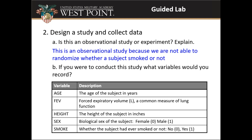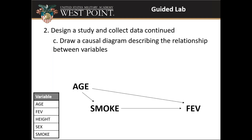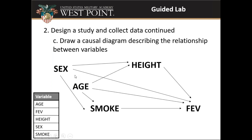After getting a good research question, we move on to designing a study and collecting data. We ask: is this an observational study or an experiment? It's an observational study — and this is where most books point out that association does not imply causation, but we want to push further. We ask what variables would you record if you were to conduct this study. Students come up with interesting variables. We ultimately give them five variables: smoking as the explanatory variable and FEV as the response, along with age, gender, and height.